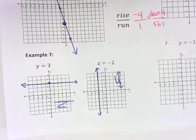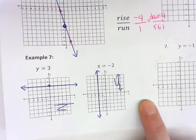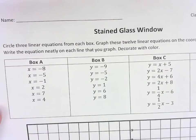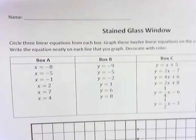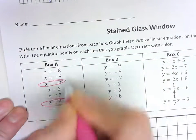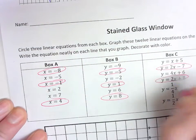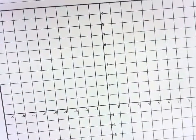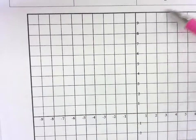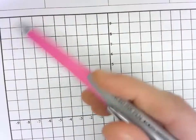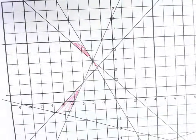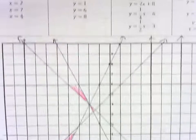After you finish this assignment, put it in the tray — it does not leave the classroom. You must finish it and turn it in before the end of class. Then work on the stained glass window assignment. Pick three equations from each box — it doesn't matter which ones. Graph them all on the same picture together, and make sure your lines go all the way through the graph. At the end, color in all the different sections with different colors, like a stained glass window.